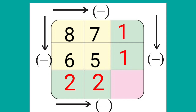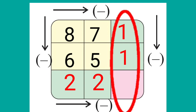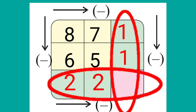Now the new numbers are here. At the right side, subtract the lower number from the upper number: 1 minus 1. And at the bottom, subtract the number at the right from the number at the left side: 2 minus 2. 1 minus 1 is equal to 0, and 2 minus 2 is equal to 0. So we will write 0 in the common box.